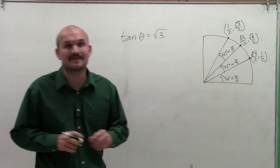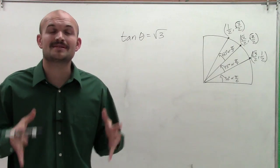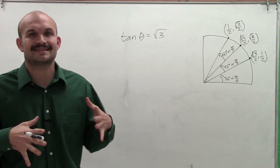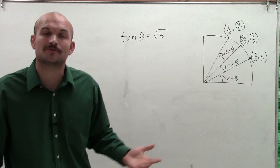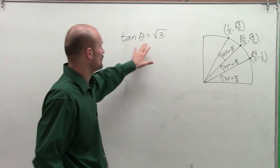Welcome. Here we go. So I have the tangent of theta equals the square root of 3. And this one's a little bit more difficult because it's not as obvious as looking at the unit circle and saying when does tangent equal the square root of 3, because we want to find the angle.